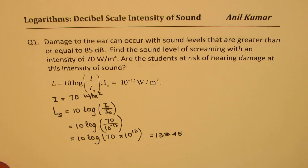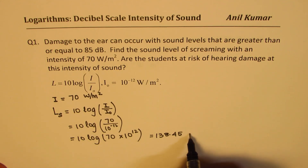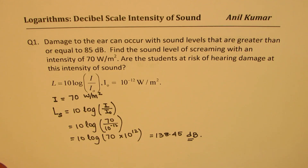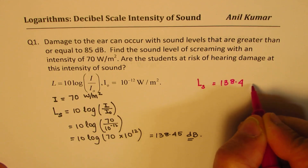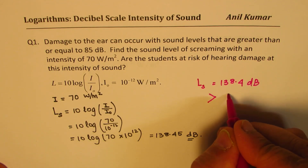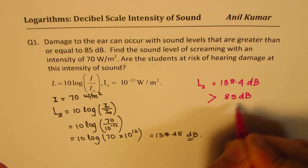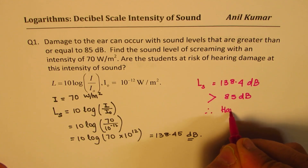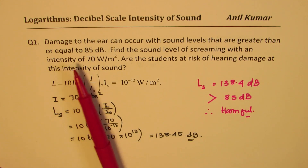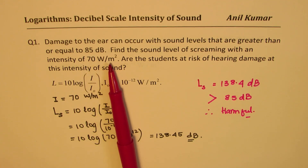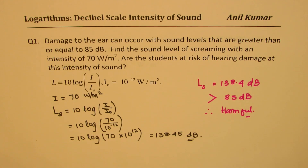That is pretty intense — 138.45 decibels. This is like screaming at the top of your voice, like a rock concert. The units are decibels. As you can see, the loudness for screaming came out to be 138.45 decibels, which is way larger than 85 decibels. Therefore it could be very harmful. Normally you will hear this level of sound at rock concerts, and even at an intensity of 70 watts per meter square, it is damaging to our ears.